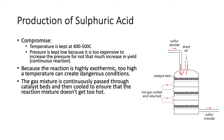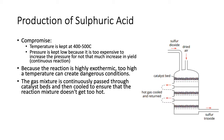Here comes the sulfur dioxide, here comes the air — they mix together at this catalyst bed and come out way too hot. So instead of going straight to the next catalyst bed and getting even hotter, they cool it down, then it goes back into the next catalyst bed, gets hot again, comes out, cools down, goes back and reacts again. The idea is to keep it at the right temperature without melting everything, and all that excess energy can be used to power the plant or preheat materials.